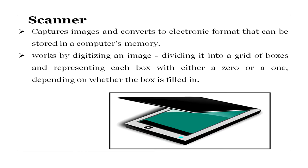The next device is the scanner, which converts images to electronic format that can be stored in a computer's memory. When you place any picture or page in a scanner, it divides it into a grid of boxes, and each box is either a 0 or 1 depending on whether it is filled with material or not. This digitized form is saved as a picture. Even if you scan text through the scanner, you will have a photo picture only — it can be cropped, resized, and given effects, but cannot be edited as text.